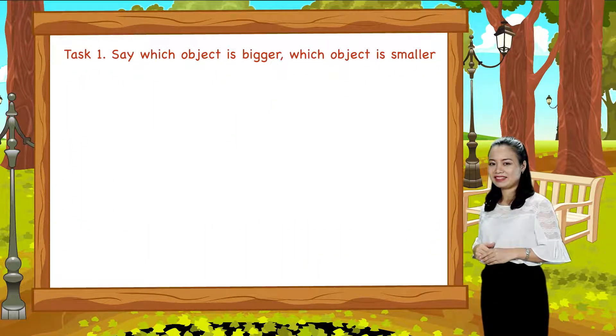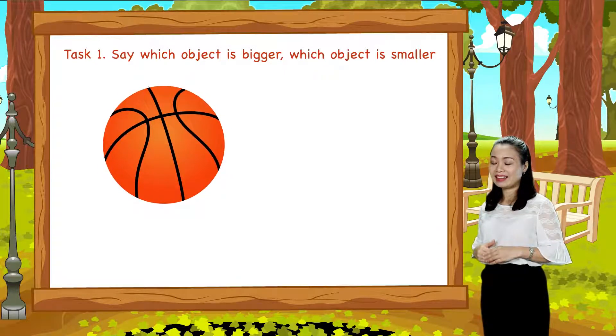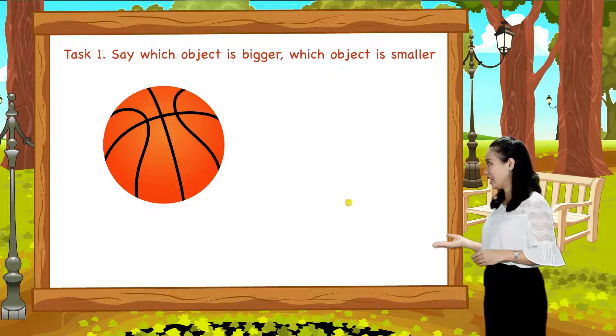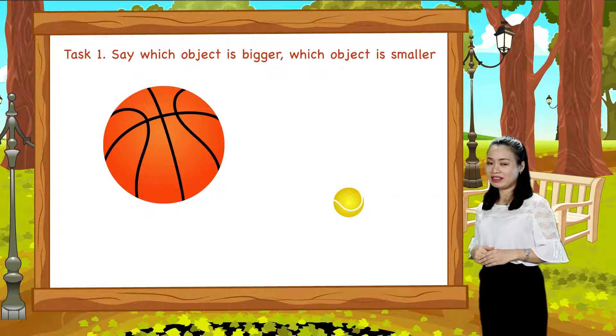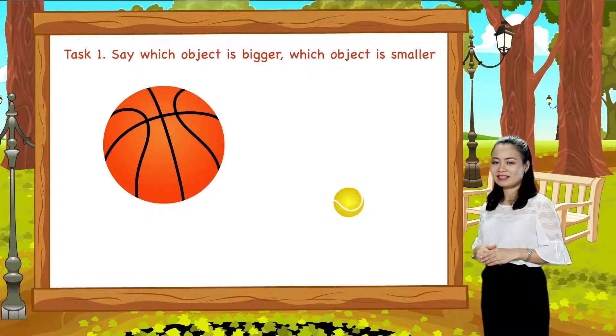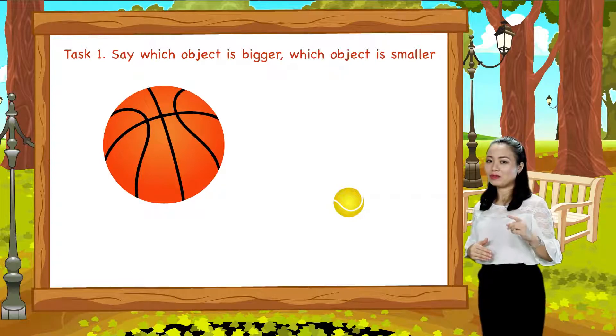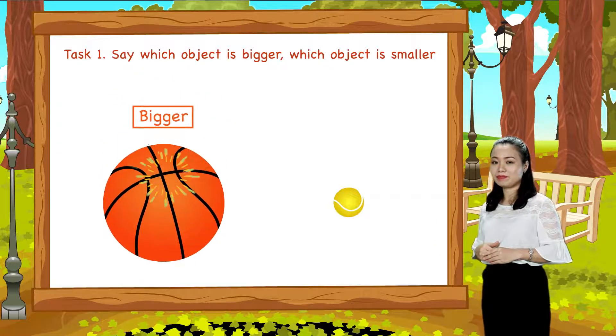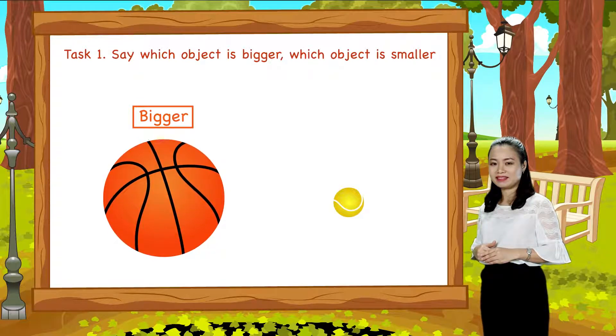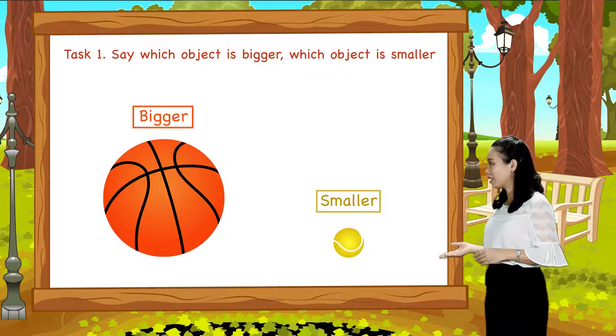Here we have a basketball and a tennis ball. Which one is bigger? Which one is smaller? So the basketball is bigger than the tennis ball or the tennis ball is smaller than the basketball.